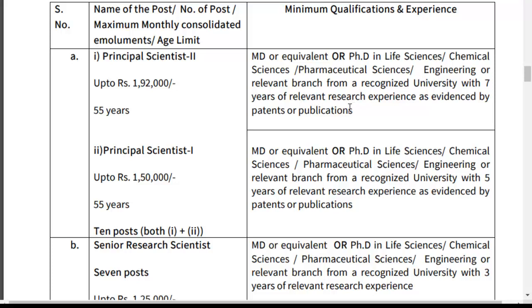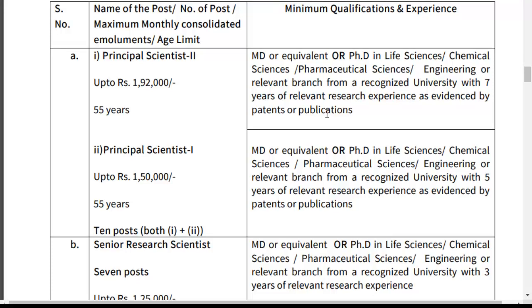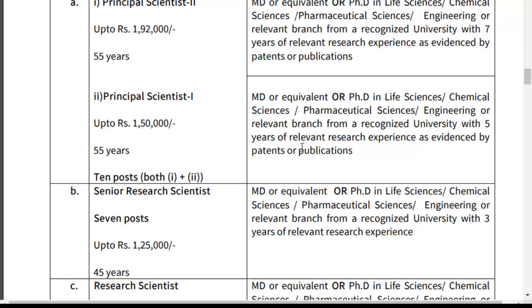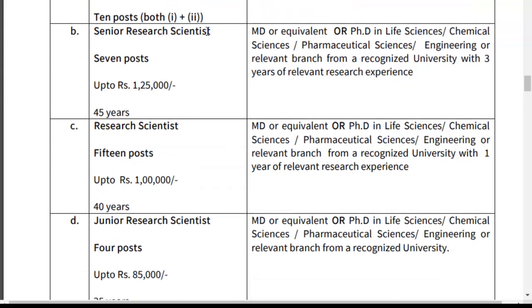For Principal Scientist Grade 1 — salary up to ₹1,50,000, age 55 years. Same PhD qualification but 5 years relevant research experience. For Senior Research Scientist — 7 posts, salary up to ₹1,25,000. PhD in Life Sciences, Chemical Sciences, or Pharmaceutical Sciences/Engineering with 3 years relevant research experience.